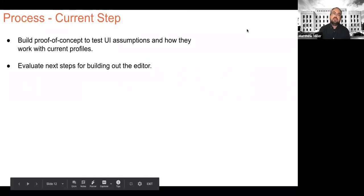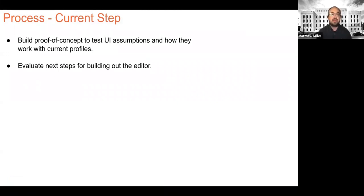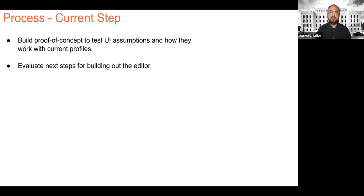To usher this process along, once we had the wireframes back, we needed to test the assumptions laid out in the design process. The idea was to build a proof of concept — not a full editor — but one that really focuses on specific UI interactions to show a number of things: that these assumptions were correct, that this is what folks really want, and that it's technologically feasible. We're currently in the step where we're evaluating this, building this proof of concept, and we're getting close to beginning the evaluation process.